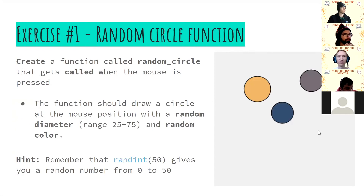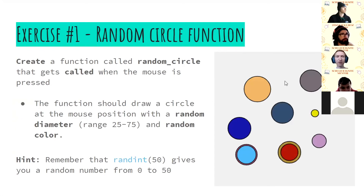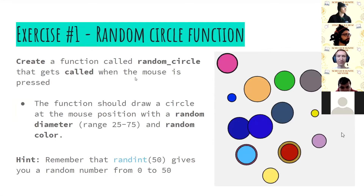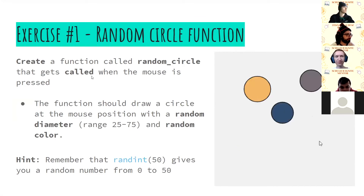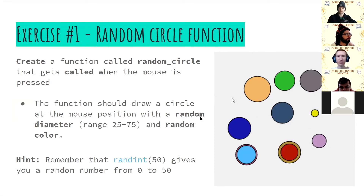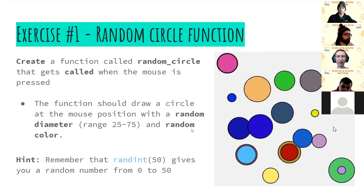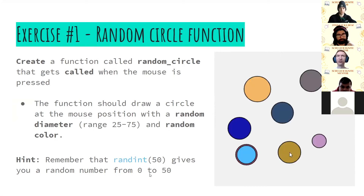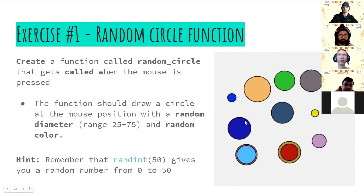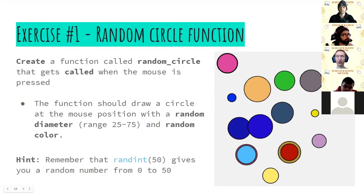Now we've got our first exercise. You'll create your own function called random_circle. It should be called whenever the mouse gets pressed. When it's called, it should draw a circle at wherever the mouse is with a random diameter and a random color. The hint is that randint(50) will give you a random number from zero to 50. We'll move you to breakout rooms and give you 10 minutes to work on that.